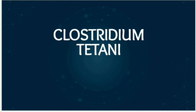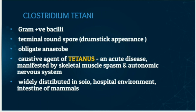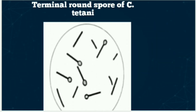Clostridium tetani is a gram-positive bacteria — it takes the purple color on gram staining — and it is a rod-shaped bacteria. It is an obligate anaerobe, meaning it does not require oxygen for its survival. This bacteria is widely distributed in soil, hospital environment, and the intestine of man and animals. Clostridium tetani is the causative agent of tetanus, which is an acute disease manifested by skeletal muscle spasm and autonomic nervous system disturbances. In this diagram you can see the terminal round spores of this bacteria.